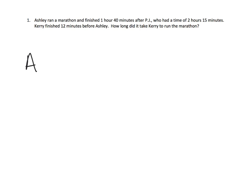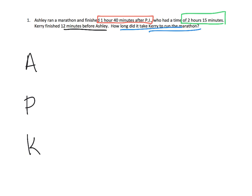Alright, so on this one we've got three characters. We've got Ashley, we've got PJ, and we've got Carrie. Ashley ran a marathon and finished 1 hour 40 minutes after PJ. PJ had a time of 2 hours 15 minutes. Carrie finished 12 minutes before Ashley. And then the question is, how long did it take for Carrie to run the marathon?